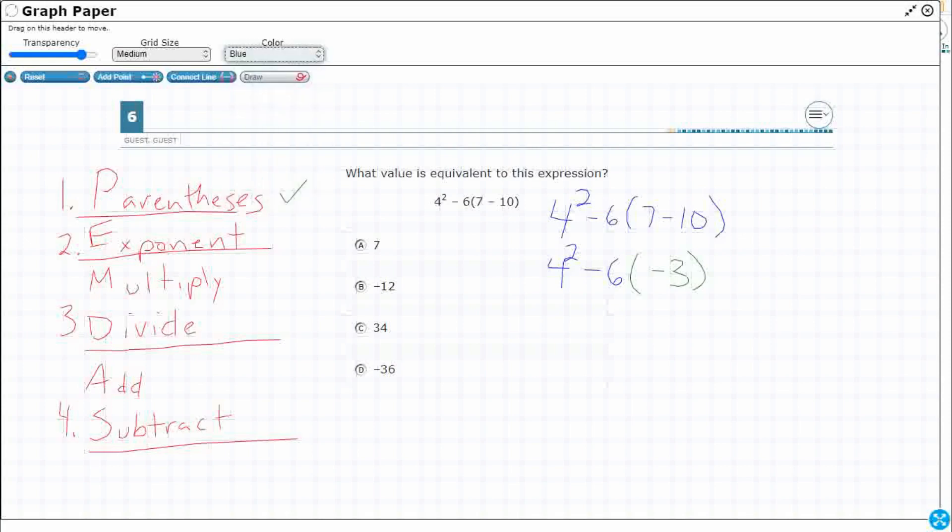Now what we have here is actually negative six times negative three. Whenever you have a number next to a parentheses and there's no operation shown, it's actually just a different way of showing multiplication. So I'm going to put a little tiny multiplication right there. So what do we have left? We've got an exponent. We've got to subtract six and then we've got a times negative three. That's the tricky part.